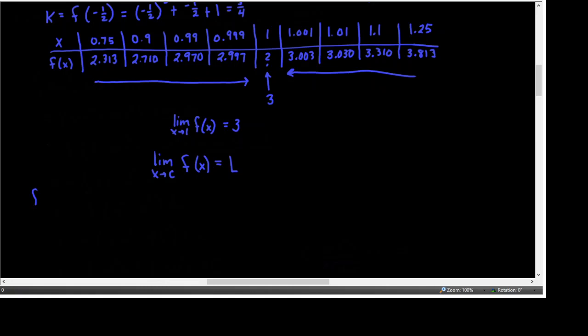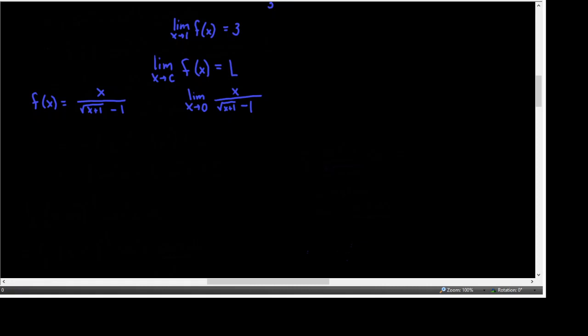So let's look at an example. f(x) = x divided by (√(x+1) − 1). It says to evaluate this function at several x values near 0 and use the results to estimate the limit. The limit we're trying to find is the limit as x approaches 0. We can use the name f(x) or write the expression of f(x) as a function. This is a numerical approach — we're using numbers in a table to help us figure this out.